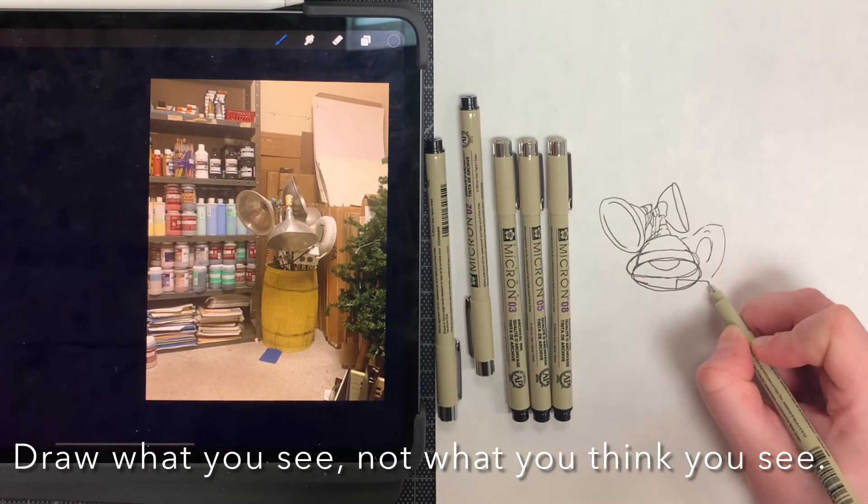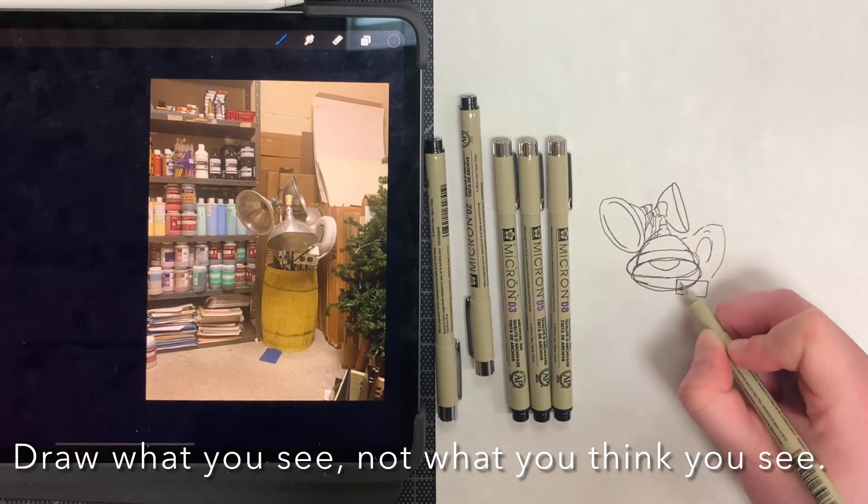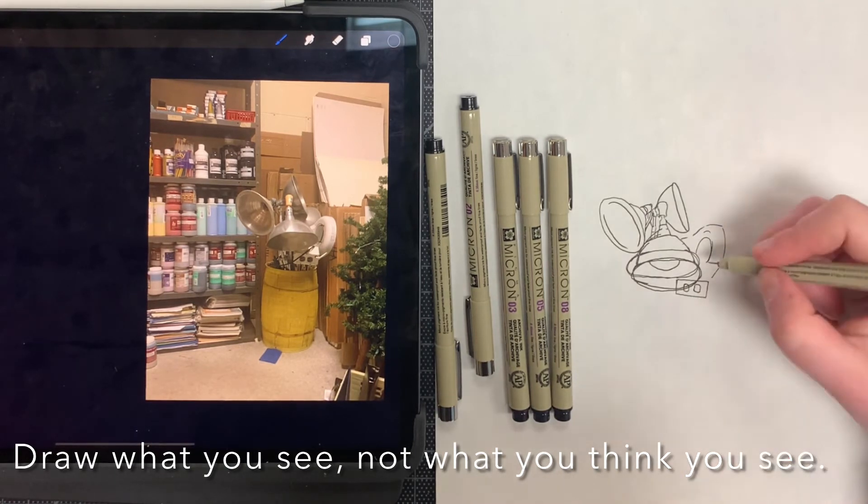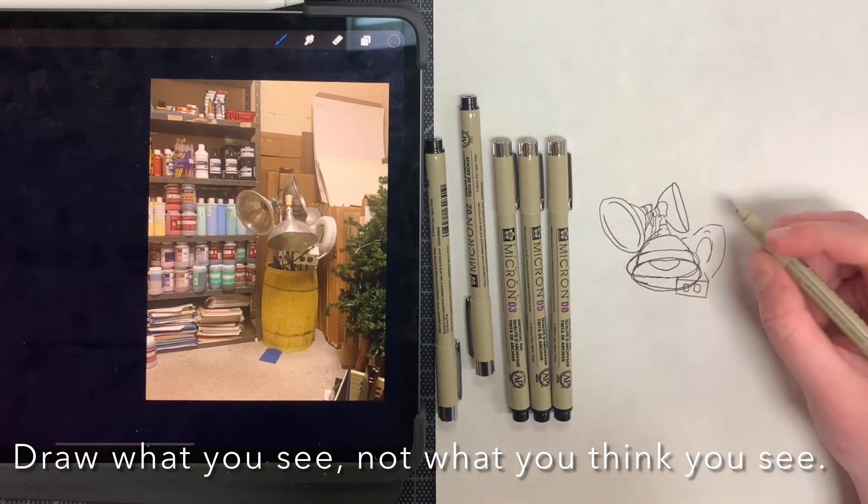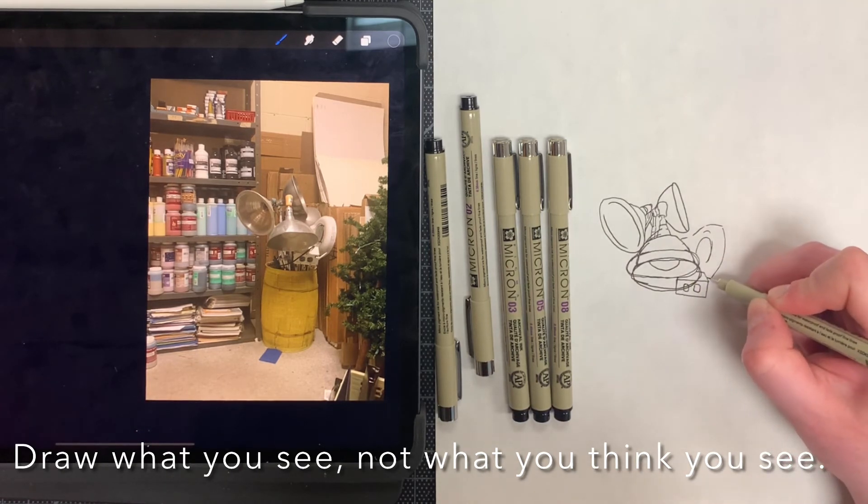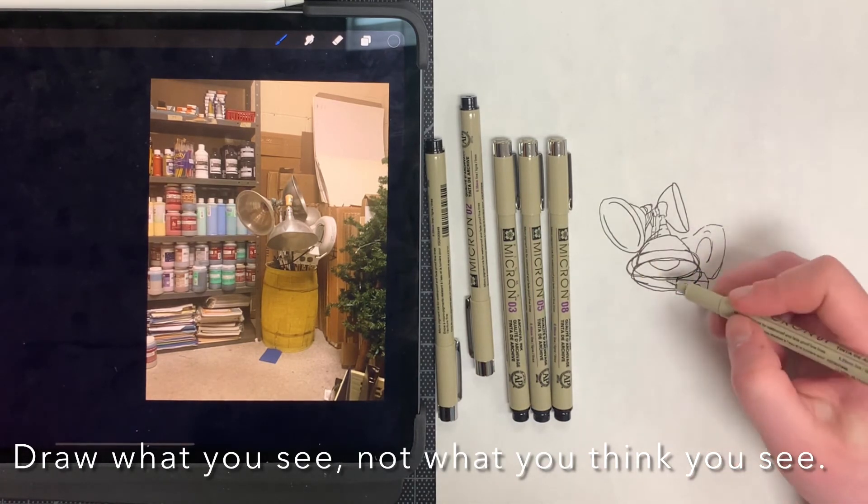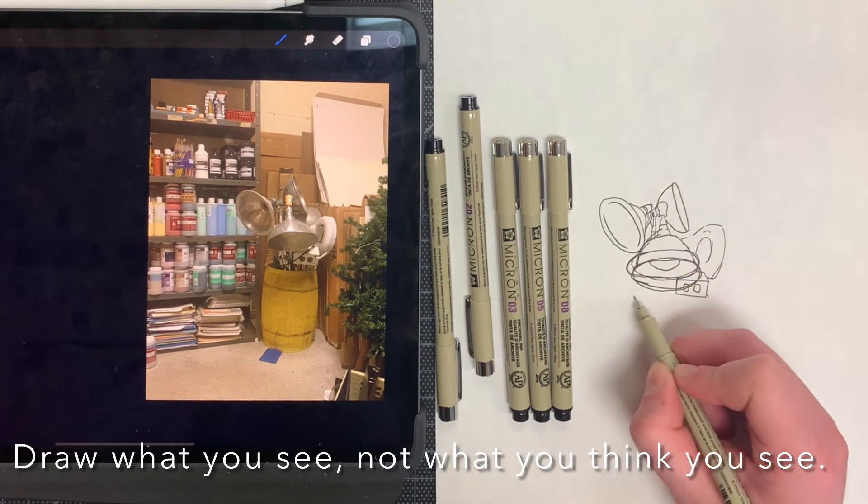You're going to notice that one of the lamps that I drew is completely drawn in the wrong spot. And that's because I didn't slow down and draw what I was seeing in front of me. I was going way too fast. So because of that, things are out of proportion. They're in the wrong spot. And the urge to want to start over was extremely strong.